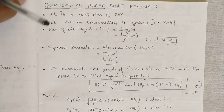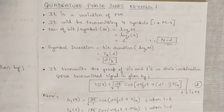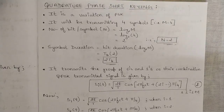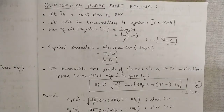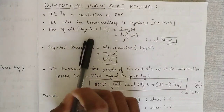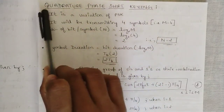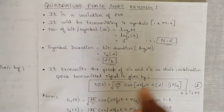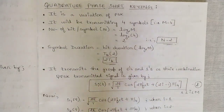Welcome everyone to this new video. In the previous video we discussed Binary Phase Shift Keying (BPSK) and its probability of error. Building on that, we are now leveling one step ahead to discuss Quadrature Phase Shift Keying (QPSK). Compared to BPSK, the number of transmitting symbols in QPSK is four, as the word 'quadrature' suggests — we need four symbols and four signals varying with respect to different phase values.